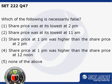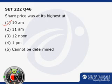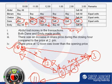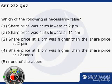The next question asks which of the following is necessarily false. The first option says the share price was at its lowest at 2 p.m. Looking at our data, we know that the share price at 2 p.m. is higher than the share price at 11 a.m. So this statement is necessarily false — statement 1 is necessarily false.